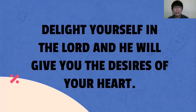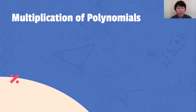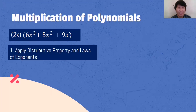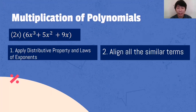Always remember to delight yourself in the Lord and He will give you the desires of your heart. Let's proceed to the main discussion of this lesson. Example: 2x multiplied by the quantity of 6x cubed plus 5x squared plus 9x. First step, apply distributive property and laws of exponents.